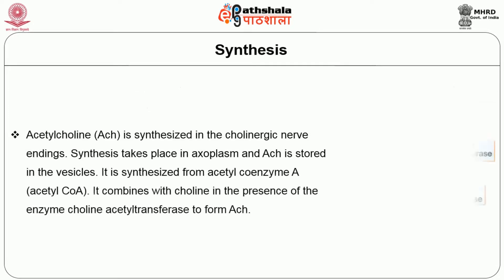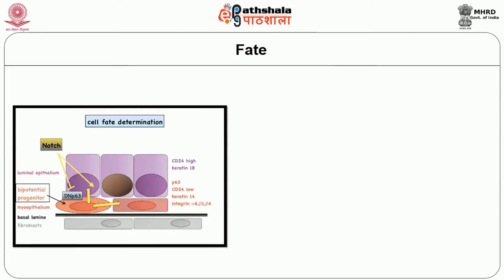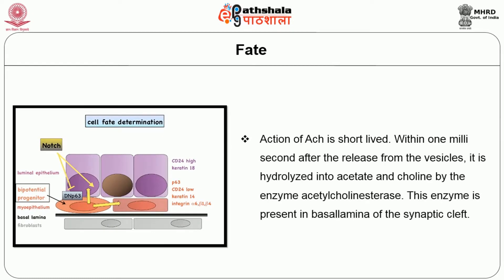Acetylcholine is synthesized in the cholinergic nerve endings. The synthesis takes place in the axoplasm and the product is stored in vesicles. It is synthesized from acetyl coenzyme A, which combines with choline in the presence of the enzyme choline acetyltransferase to form acetylcholine, as illustrated in the figure showing synthesis and breakdown. The action of acetylcholine is short-lived — within 1 millisecond after release from the vesicles, it is hydrolyzed into acetate and choline by the enzyme acetylcholinesterase, which is present in the basal lamina of the synaptic cleft.